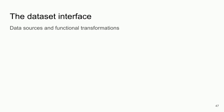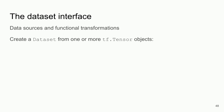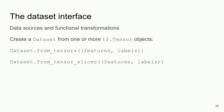So how do we use tf.data? There's the dataset interface: data sources and functional transformations. We need to create a dataset object from tensor objects — dataset from tensors with our features and our labels. We could also create a dataset from tensor slices if we didn't want the full tensors, or read in text from a bunch of different file names — like 100GB split across various files — and create a dataset that is the agglomeration of all those smaller components.